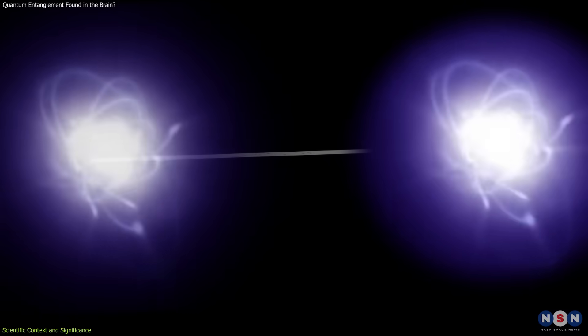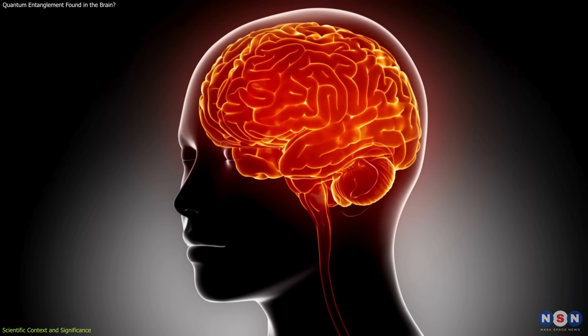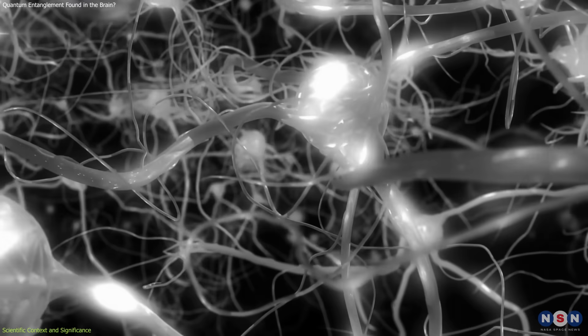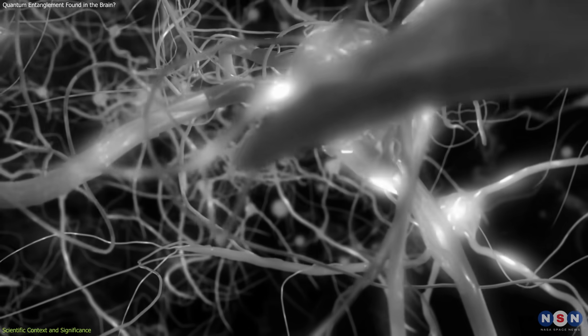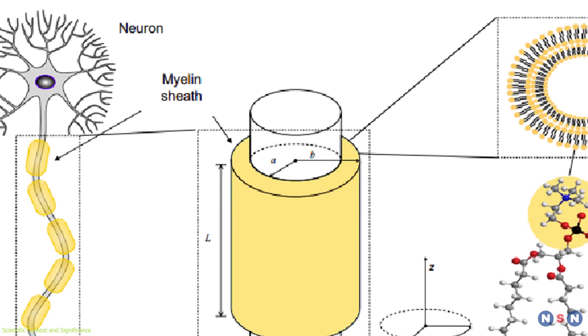Critics pointed out that quantum coherence is extremely delicate, usually destroyed in warm, noisy environments like the brain. The Shanghai study avoids the microtubule route and focuses instead on myelin, a well-studied component of the nervous system.